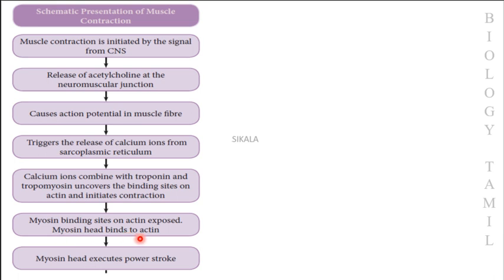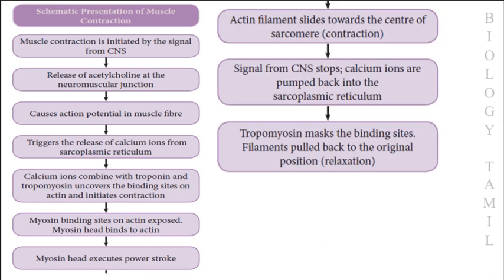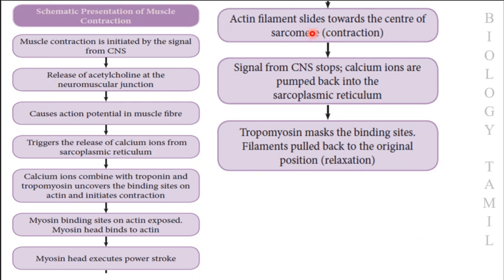The myosin head binds to actin and executes the power stroke. The actin filament slides towards the center of the sarcomere — that is the contraction. The actin filament moves to the center of the sarcomere.